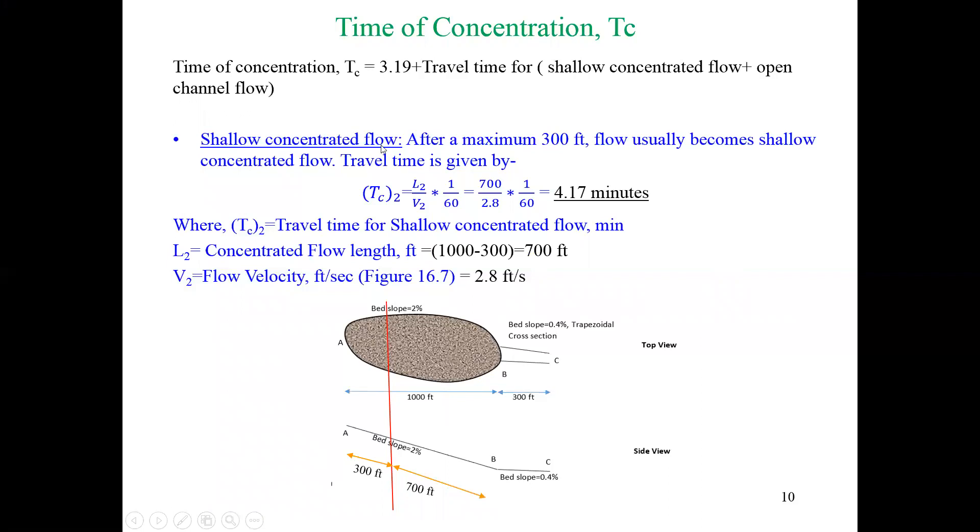Now we have to calculate the shallow concentrated flow. That was the equation. If you look at the picture again, in total the length was 1000 feet, and they mentioned after 1000 feet the flow was open channel flow. So basically the first 300 feet was sheet flow, and the rest 700 feet was shallow concentrated flow. That's why L2 is 700 feet. For V2 we need to know the flow velocity from Figure 16.7.